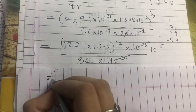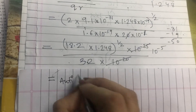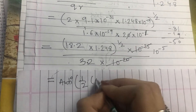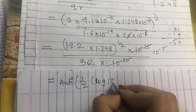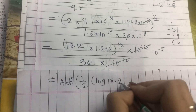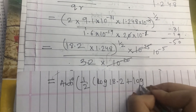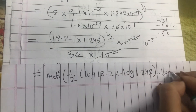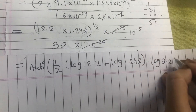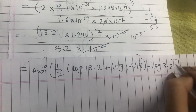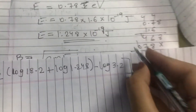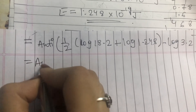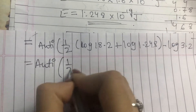Now we will use logarithms. Taking log with the half power, we compute: half of log of 18.2 plus log of 1.248 minus log of 3.2, multiplied by 10 raise to minus 5. Here 18.2 has 2 digits so 1 pointer, 1.248 has 1 digit so 0 pointer, and 3.2 has 1 digit so 0 pointer.